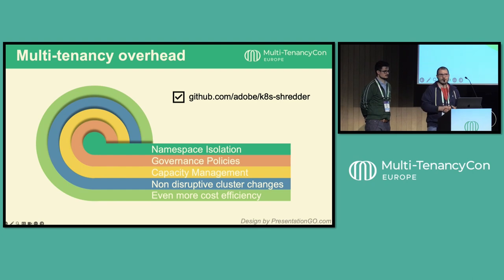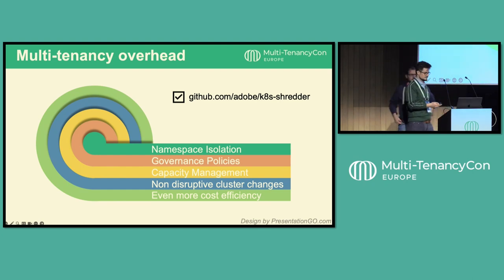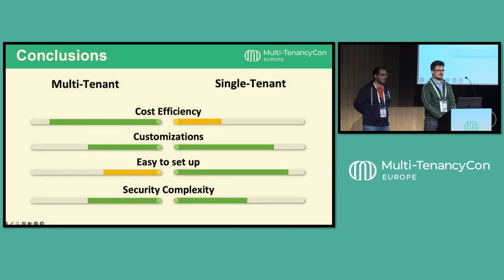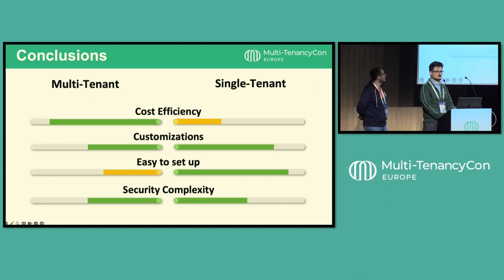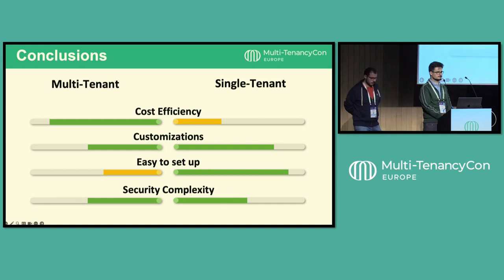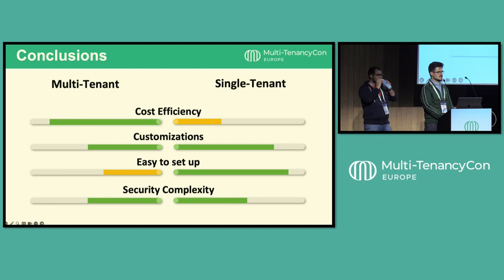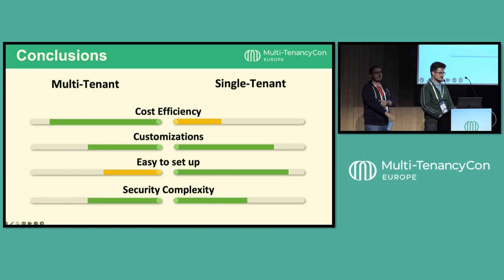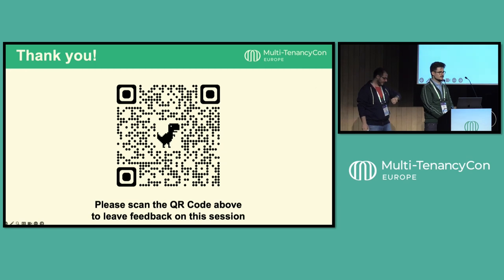A few takeaways from our journey running multi-tenant and single-tenant clusters in Adobe: there is no silver bullet for building a Kubernetes platform. You should always align with your organization's needs and specific requirements. It's essential to acknowledge that challenges at scale differ significantly from those in small and medium-sized platforms. For us, both solutions work — multi-tenancy provides efficiency in cost and scalability at scale, while microclusters with single-tenancy can help your organization grow faster because they provide better customization opportunities and are simply easier to set up. Thank you — please scan the QR code for feedback, and we're open for questions.